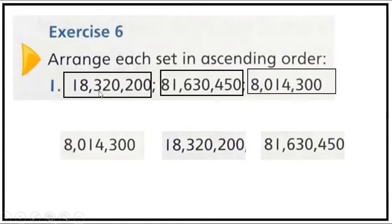In ascending order, we need to find the smallest. Eighteen million, eighty one million, or eight million. Eight million is the smallest. So we write 8,014,300, then semicolon, then 18,320,200, semicolon, and then the biggest number 81,630,450.